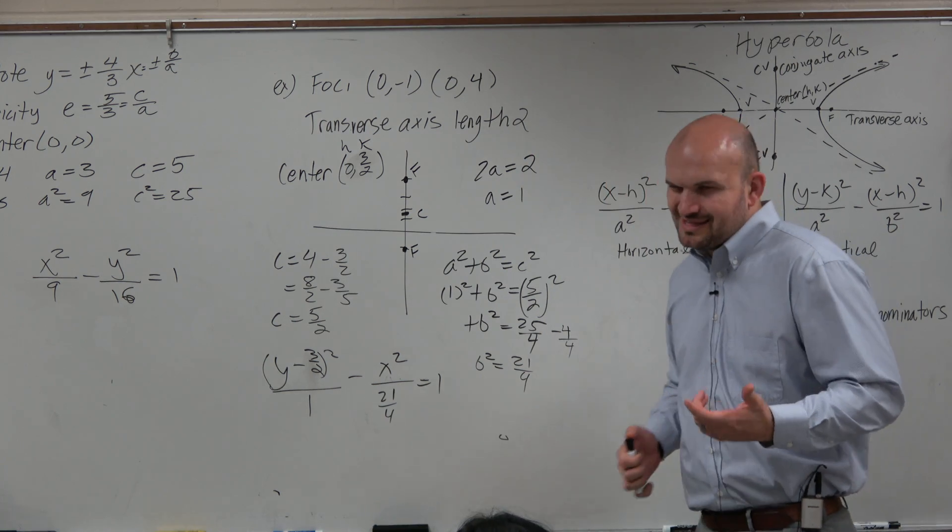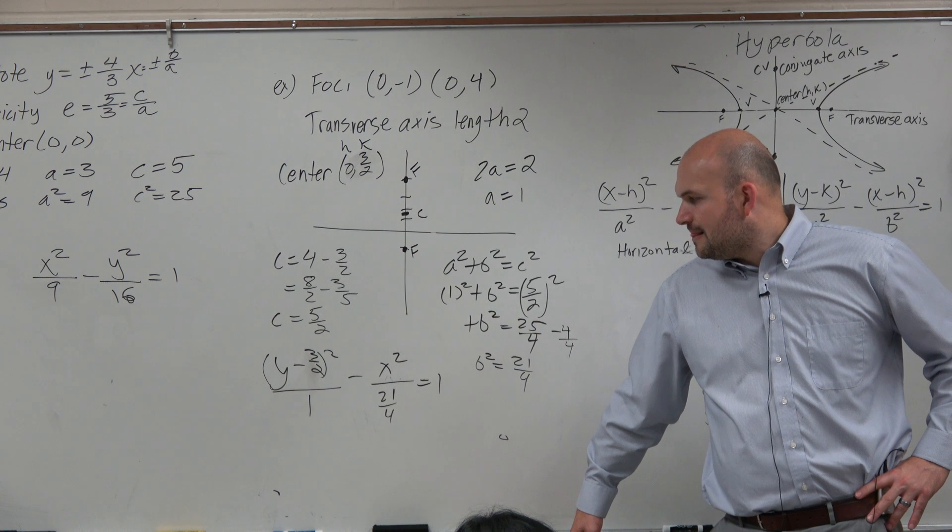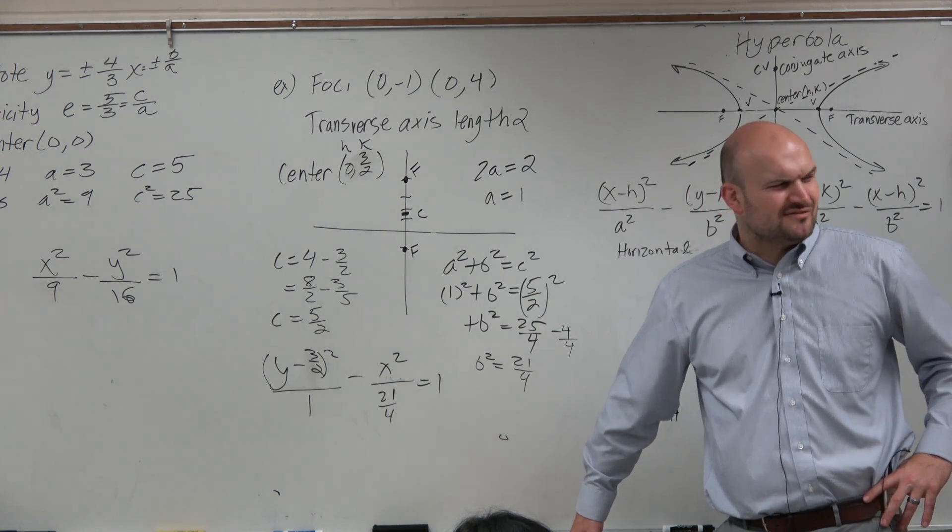So the reason why we don't like this, guys, we don't like taking fractions divided by fractions. That's kind of like a lot. So instead of taking x squared dividing it by a fraction, instead of dividing by a fraction, we could always multiply by the reciprocal.